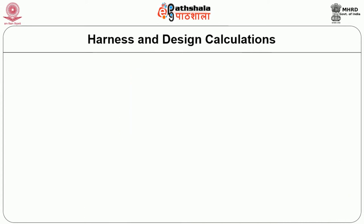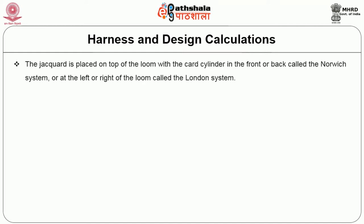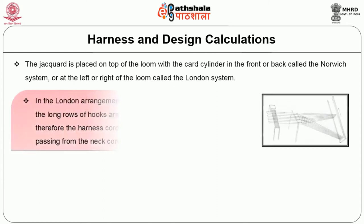We will now look into the different types of harnesses and the design calculations. A jacquard is generally placed on top of the loom with the card cylinder in front or back — called the Norwich system — or at the left or right of the loom — called the London system. In the London arrangement, the card cylinder is at the side and the long rows of hooks are perpendicular to the combo board. Therefore, the harness cords are crossed with each other as they pass from the neck cord to the holes in the combo board.